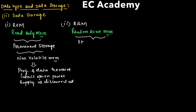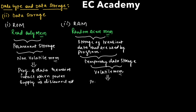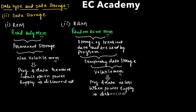RAM is used for storage of transient data — that is, intermediate values — used by a program. So RAM is used for temporary data storage, and hence it is also known as volatile memory, which means program and data are lost when the power supply is disconnected.